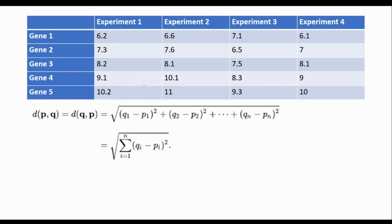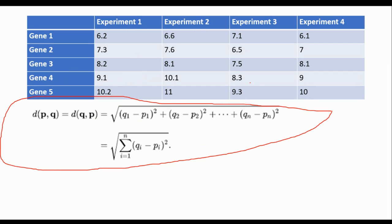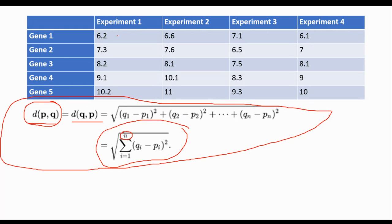For each item we ask you to group them using different measures. For the first one we ask you to apply Euclidean distance, so the formula should be written. This is the general formula and it is symmetric. Instead of n, we have the number of experiments, because we are comparing gene 1 and gene 2 across different experiments. So n here is actually related to the number of experiments — it should be 4 — not the number of genes.